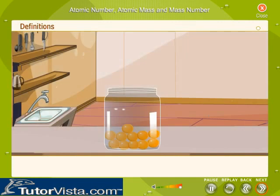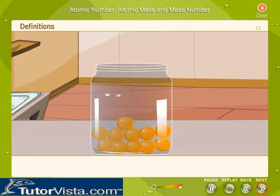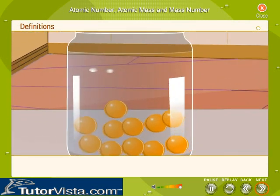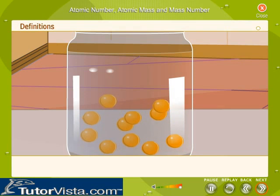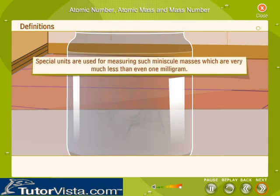All matter has some amount of mass, even if it is very small. The mass of an atom is insignificantly small. How does one measure such minuscule mass which is very much less than even one milligram? Special units are used for measuring such minuscule masses.